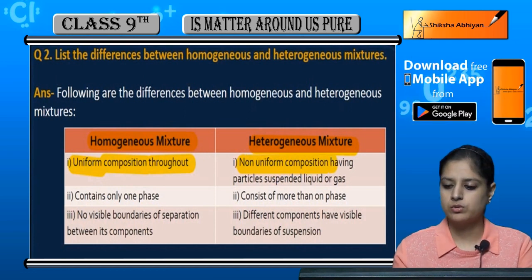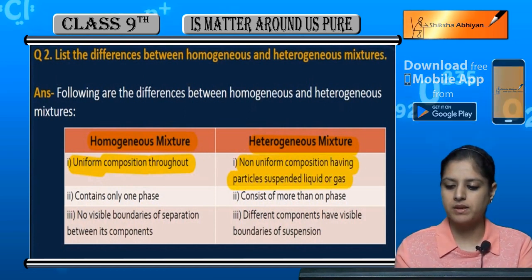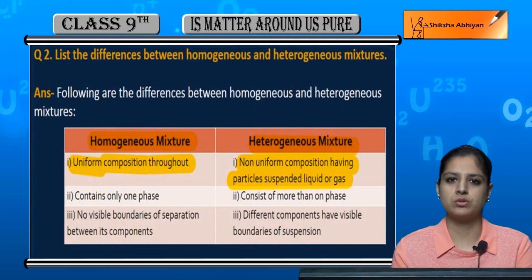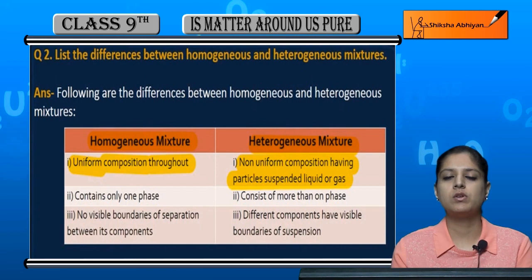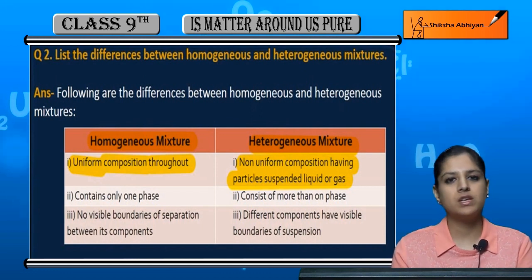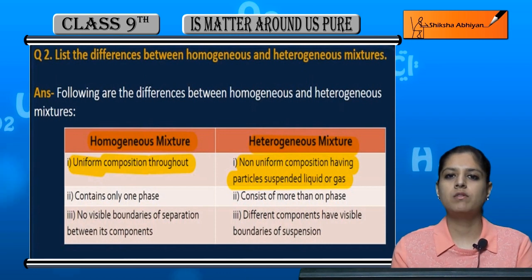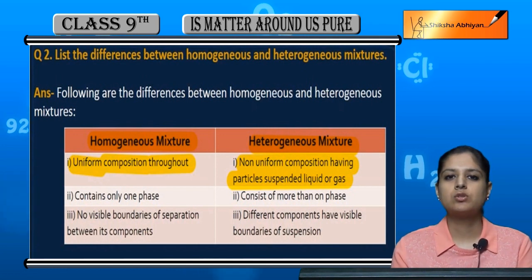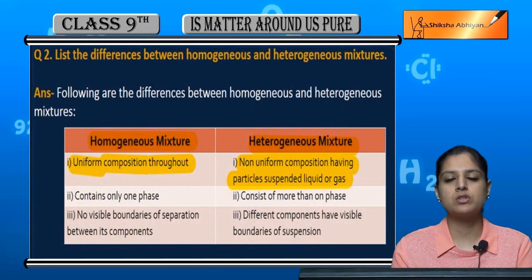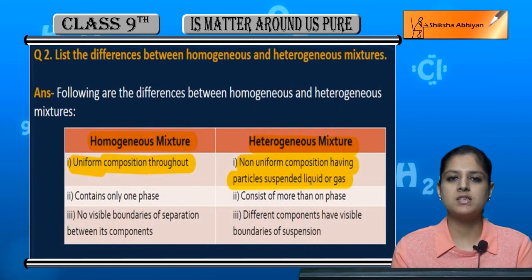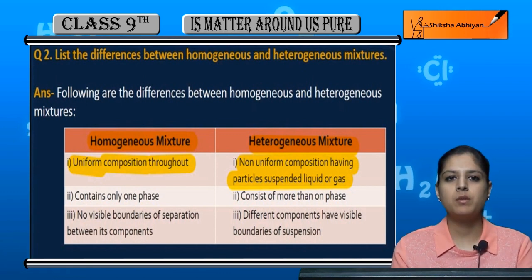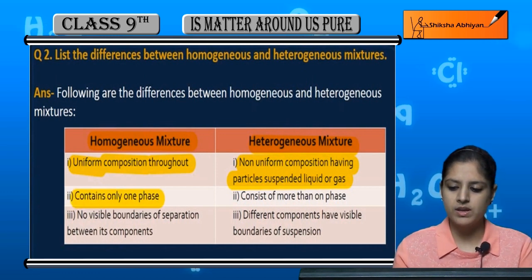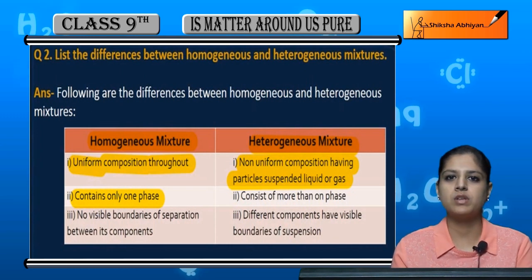Heterogeneous mixtures have non-uniform composition because the solute particles are suspended in a liquid or gas — they are insoluble and not dissolved. Because they are suspended throughout the solution, they can go to any portion, meaning every portion of the composition is different.